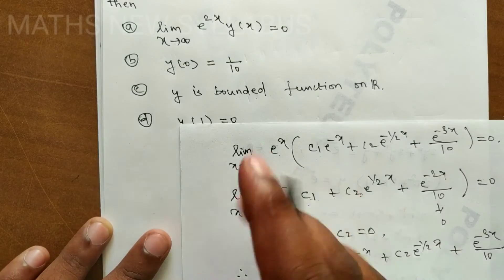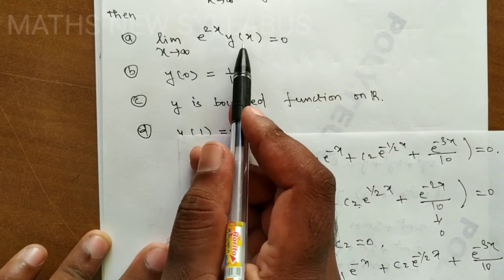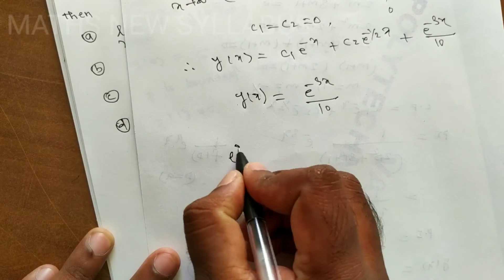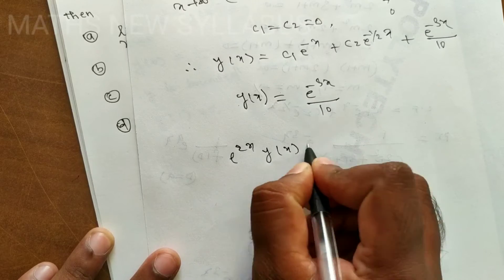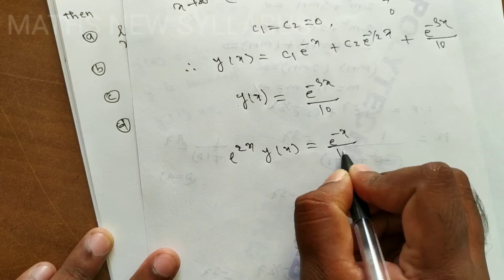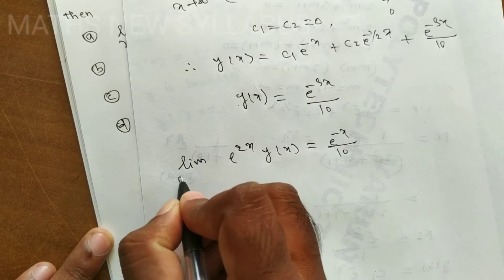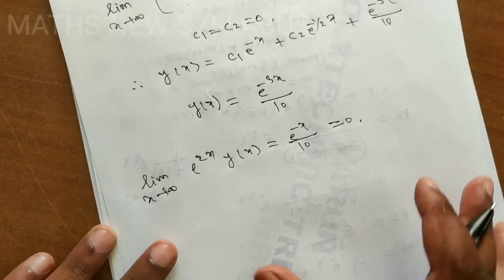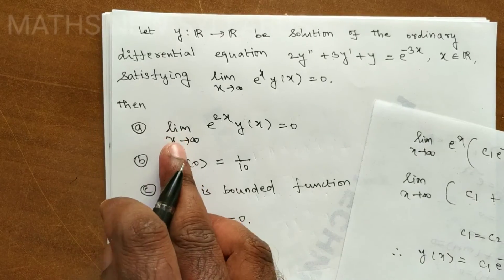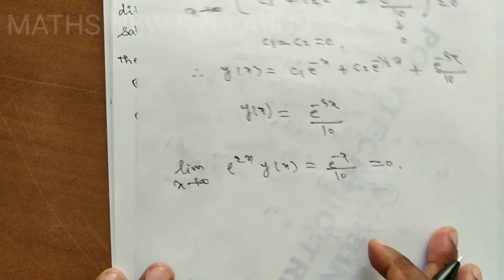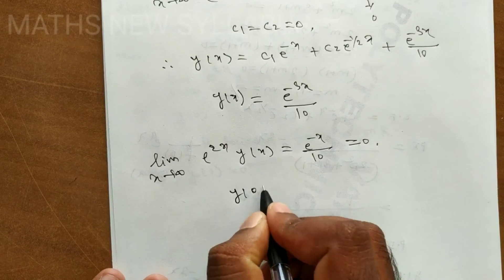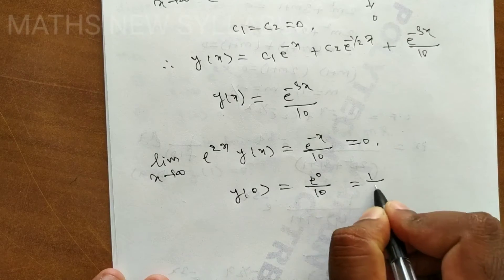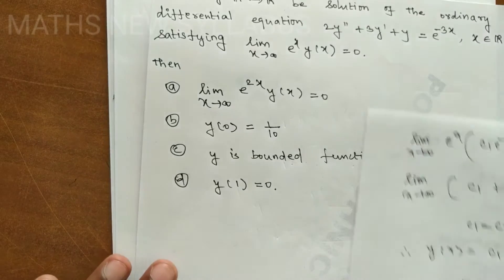Checking option (a): e^(2x) · y(x) = e^(2x) · e^(-3x)/10 = e^(-x)/10. As x → ∞ this converges to 0, so option (a) is correct. Checking option (b): y(0) = e^0/10 = 1/10, so option (b) is also correct.